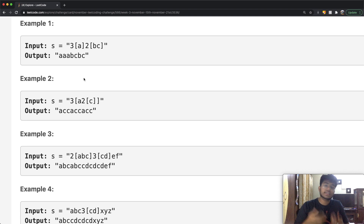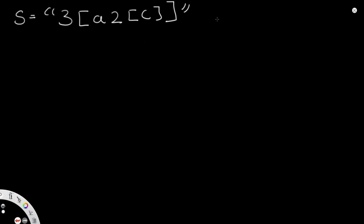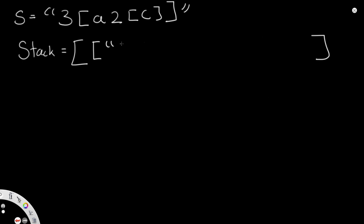You can think of using a stack where you're storing all these values and each time they're getting modified. So let's see how we can actually use a stack to solve the question. We're going to do the same example: 3[a2[c]]. The idea is to use a stack represented as a list. We start off with a dummy element inside — an empty string paired with the value one. We'll see its purpose soon.